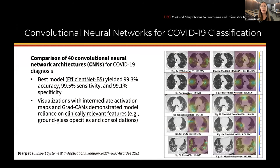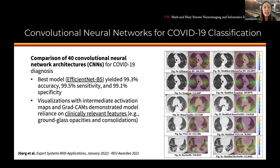I wanted to highlight a few of the projects that my students have been working on — they've been very productive. Aksh Garg is one of my NSF Research Experiences for Undergraduates fellows. He started while he was in high school and is now a first-year undergrad at Stanford. His paper was just accepted in Expert Systems with Applications. He did a comparison of 40 convolutional neural network architectures to distinguish COVID versus not COVID, and found that the best model, EfficientNet B5, yielded extremely high accuracy, sensitivity, and specificity. The model also relied on clinically relevant features such as ground-glass opacities and consolidations, which are often seen in COVID-19 patients.